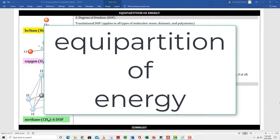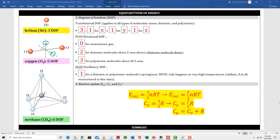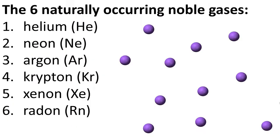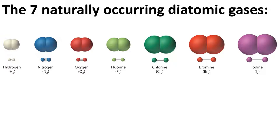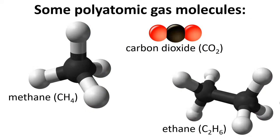Let's talk about equipartition of energy. We're going to look at three basic types of gas: a monoatomic gas like helium, a diatomic gas like oxygen, and a polyatomic gas like methane. There are six naturally occurring monoatomic gases: helium, neon, argon, krypton, xenon, and radon — think of these as point masses. There are seven naturally occurring diatomic gases: hydrogen, nitrogen, oxygen, fluorine, chlorine, bromine, and iodine — think of these as two point masses connected by a massless stick. Some polyatomic gas molecules: carbon dioxide has three atoms, methane has five atoms, and ethane has eight atoms.